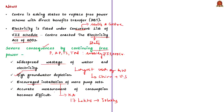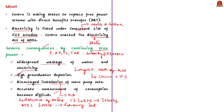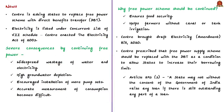Another reason mentioned to discontinue free power is the absence of meters for these connections, making measurement of consumption by farmers difficult. Power distribution companies find it convenient to reduce their Aggregate Technical and Commercial losses (AT&C losses) by clubbing a portion of these losses with energy consumption by the farming sector. These are the negative consequences related to free electricity to farmers discussed by the author.